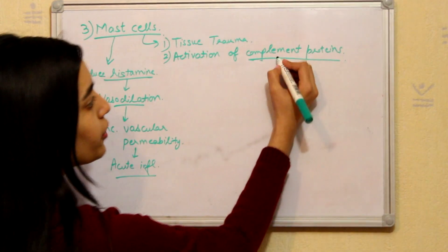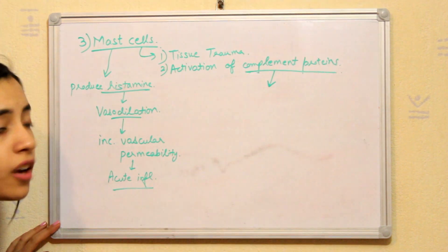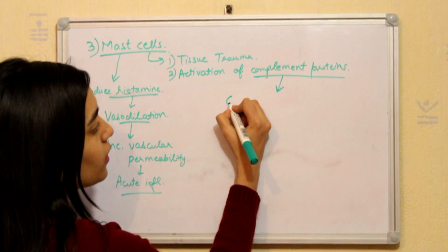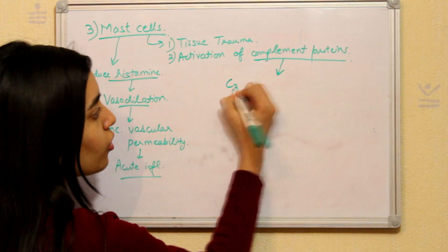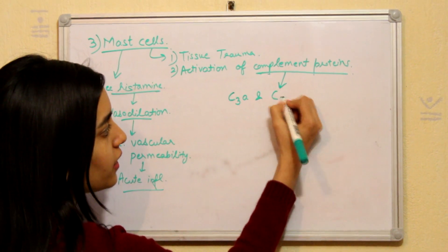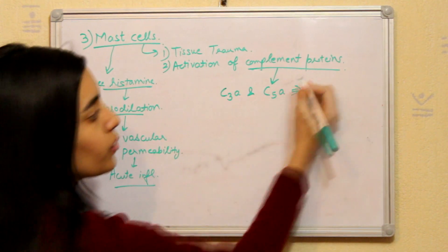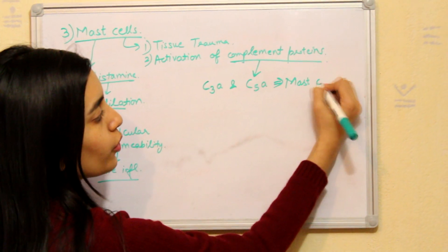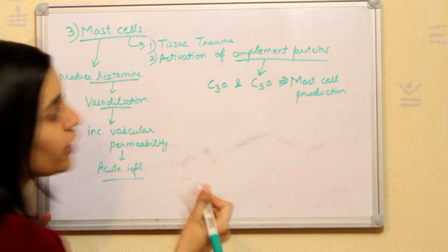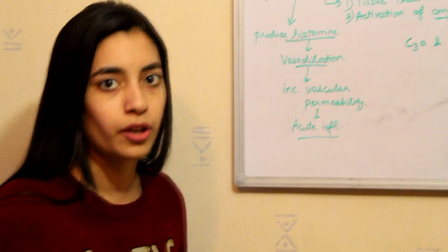Now the only thing that you need to know about complement proteins right now is that two of the complement proteins which are called C3A and C5A, it activates the mast cell production. We will discuss in more details about complement proteins in the next videos.